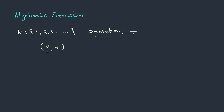N is a set and the operation we are performing on the set elements is addition. We can also define subtraction on integers, written as Z with the operation subtraction. It is not necessary to have just one operation — it can be two or more. For example, addition and subtraction on real numbers, written as real numbers with operations plus and minus.